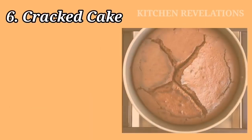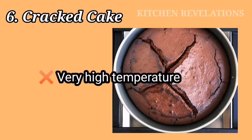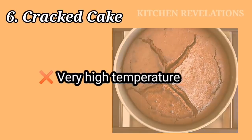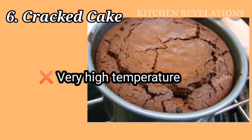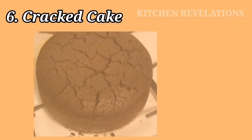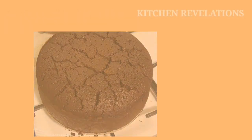The next problem is a cracked cake. This happens when your temperature setting is really high. If the oven is too hot, the outer portion of the cake cooks much faster than the inside. The top portion cooks quickly while the inside continues to cook, and this results in a cracked crust. So it is always important to check the temperature settings before baking.